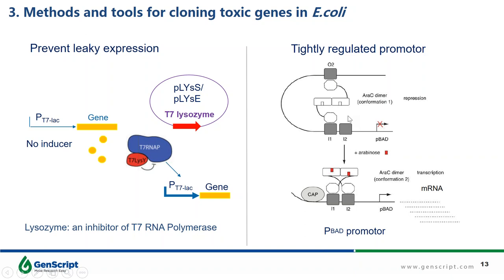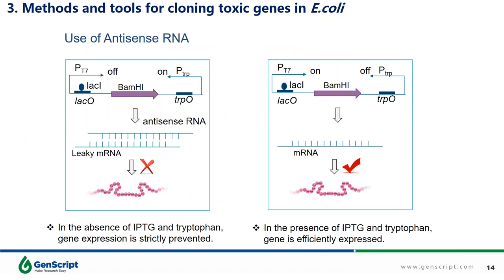You can also use the PBAD promoter for tightly regulated expression. PBAD is regulated by the addition and absence of arabinose. Without arabinose, the PBAD and PC promoters are repressed by protein AraC. In the presence of arabinose, transcription from the PBAD promoter is turned on, and in its absence, transcription occurs at a very low level. Sometimes, although the transcription system is highly suppressed, leaky transcription of an extremely toxic gene is still fairly lethal to the host. Therefore, it is necessary to take measures to prevent translation of the leaky mRNA.